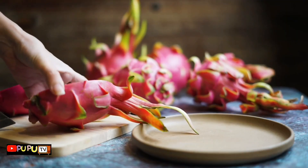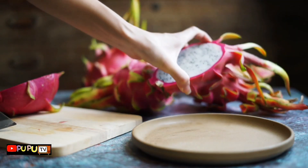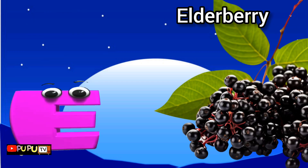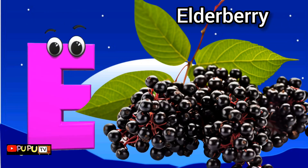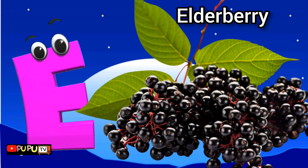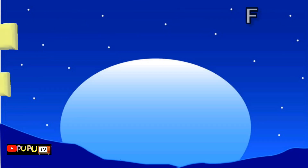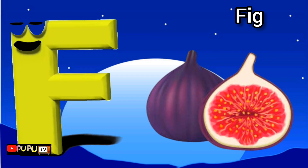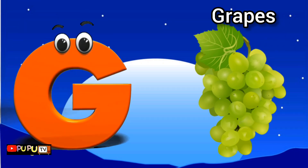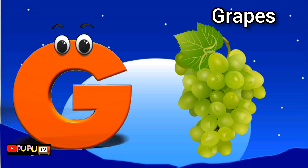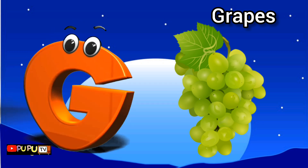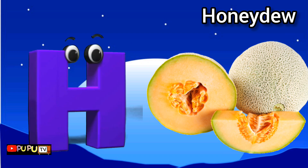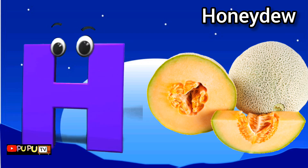E is for elderberry, e-e-elderberry. F is for fig, f-f-fig. G is for grapes, g-g-grapes. H is for honeydew, ha-ha, honeydew.